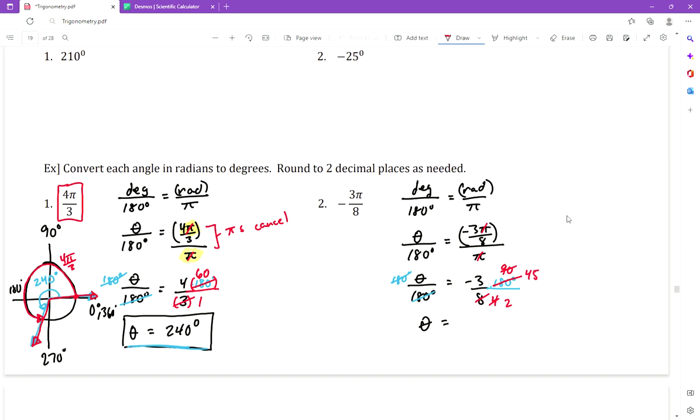Now we need to multiply -3 and 45. We'll multiply those, it becomes a little easier with the multiplication when you do some reducing first.